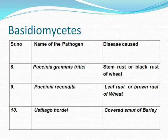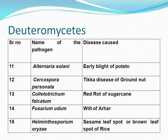Deuteromycetes diseases: Alternaria solani causes early blight of potato; Cercospora personata causes tikka disease of groundnut; Colletotrichum falcatum causes red rot of sugarcane; Fusarium udum causes wilt of arhar; and Helminthosporium oryzae causes sesame leaf spot or brown leaf spot of rice.